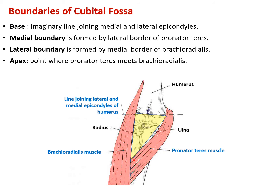The apex is formed where pronator teres meets brachioradialis. The medial boundary is formed by the lateral border of pronator teres, and the lateral boundary is formed by the medial border of brachioradialis.